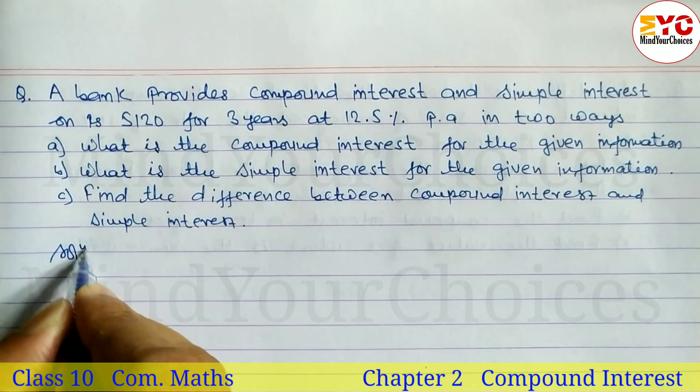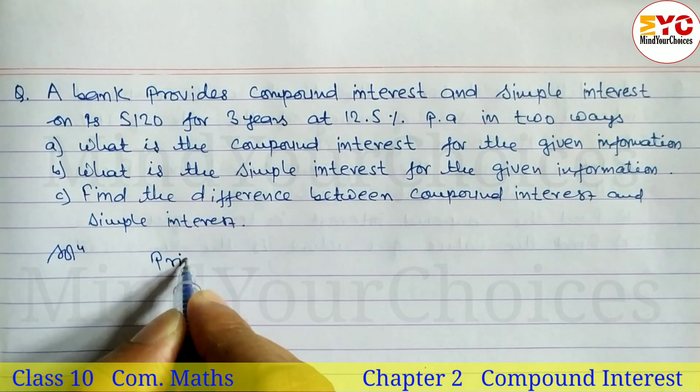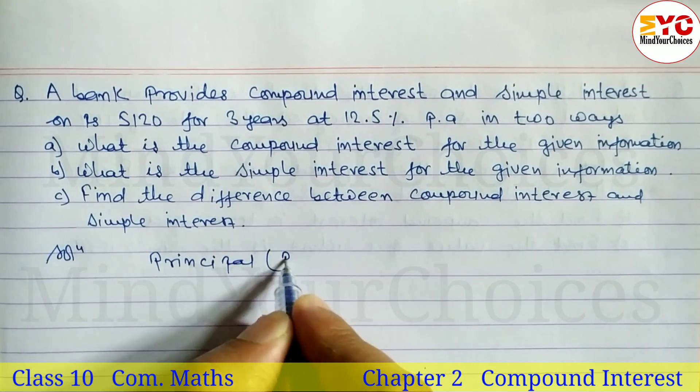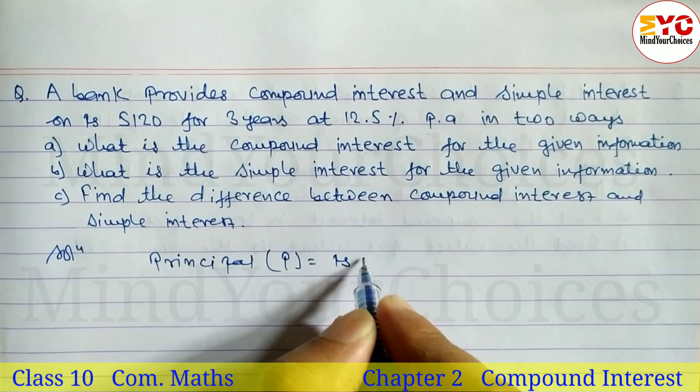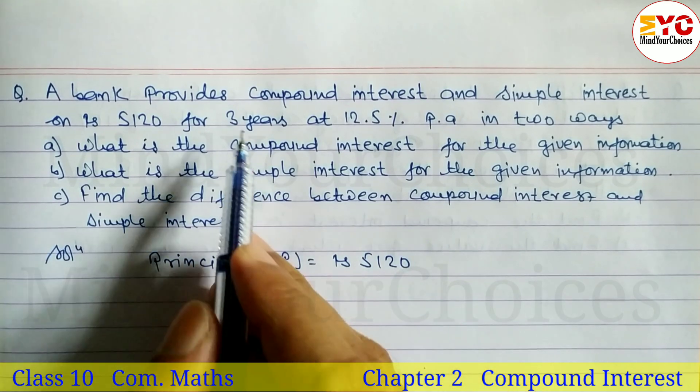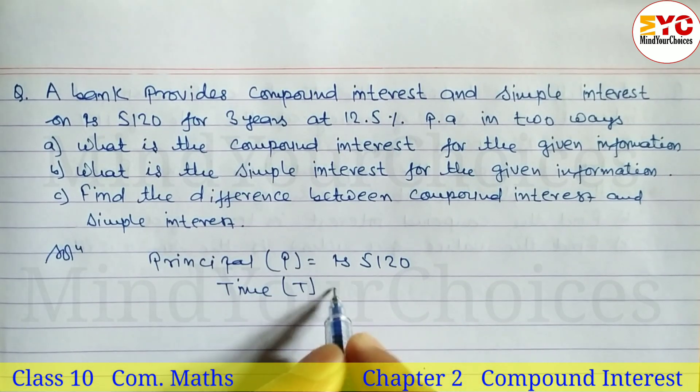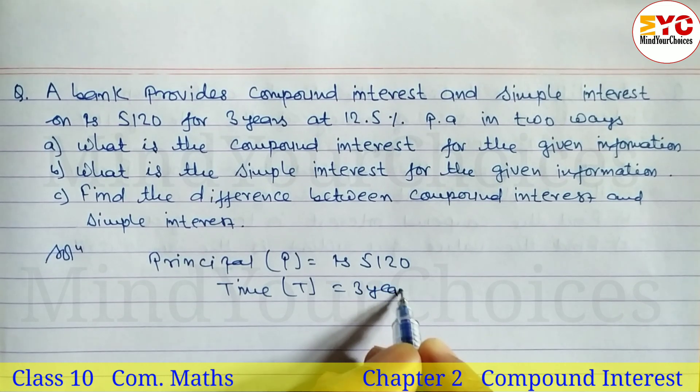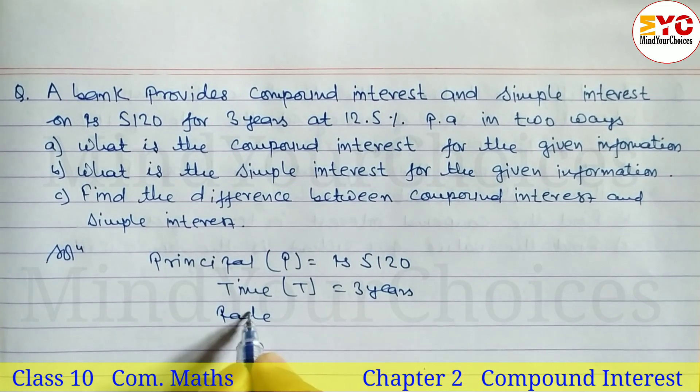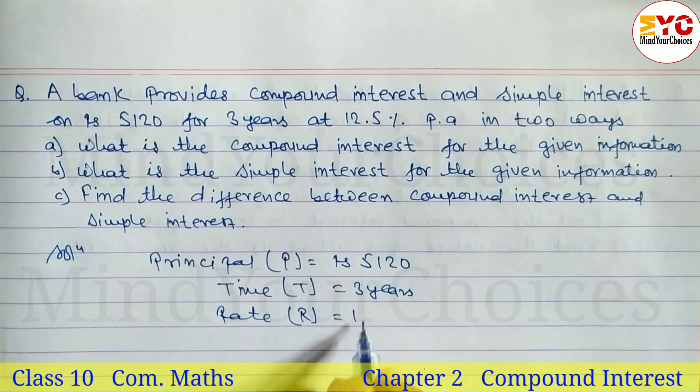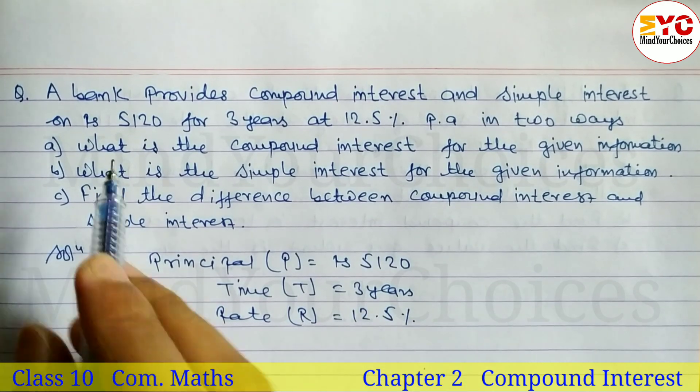Let's take a start. Here we have to write down the given information. Principle P is equal to Rs. 5,120. Time T is equal to 3 years. Rate R is equal to 12.5%.